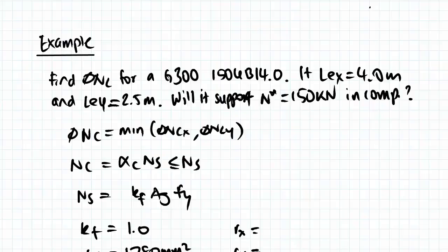In our example, we're given a Grade 300 150UB14. The effective lengths are given to be Lex = 4m and Ley = 2.5m. We want to find the member capacity and see if it will support a load of N* = 150kN in compression.